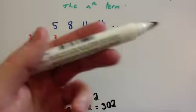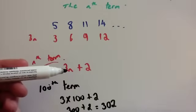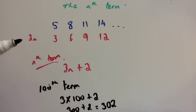If I wanted the millionth number in the sequence, I'd do 3 times a million — that's 3 million — plus 2, which is 3,000,002. Simple as that.